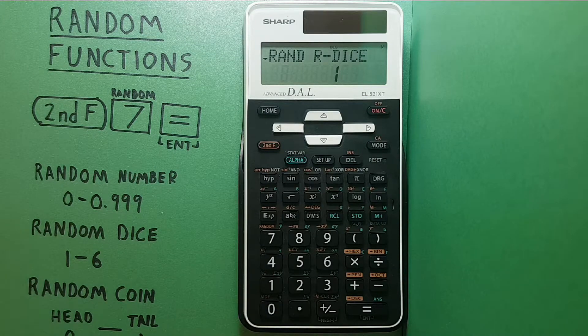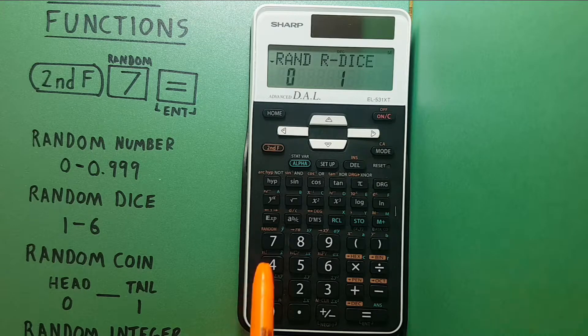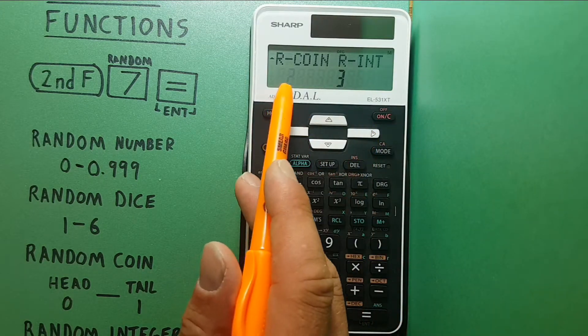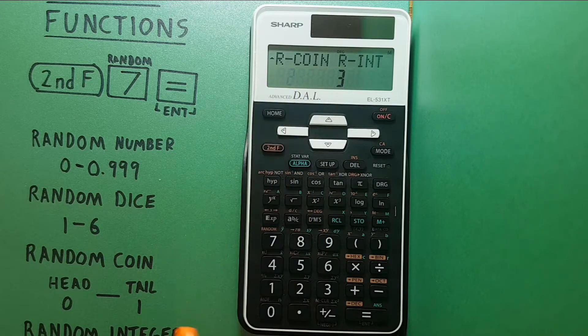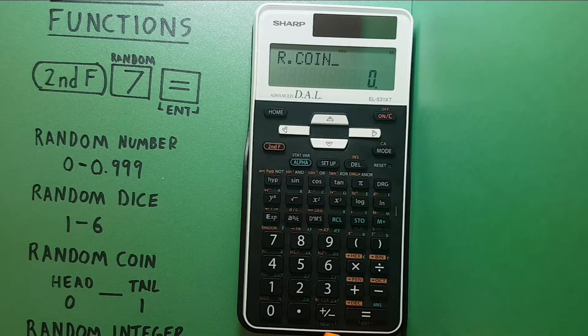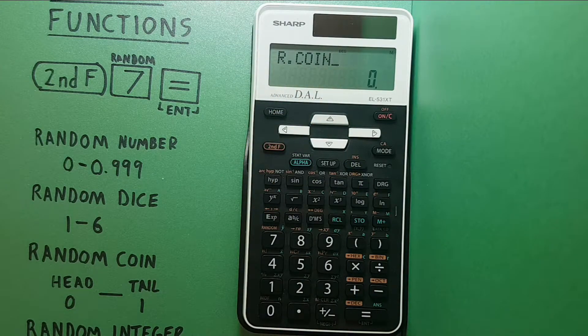All right now let's look at the coin flip. Again back to the random function screen and we use the arrow to move over twice highlighting the r coin and the flashing two. We press equals. Our coin appears at the top of the screen with zero and we press equals.